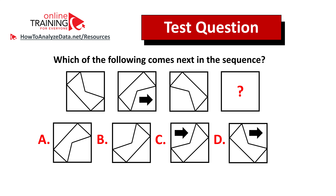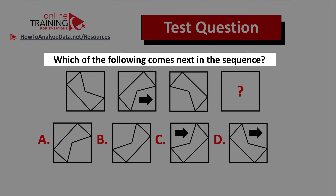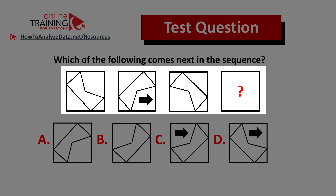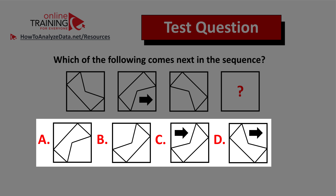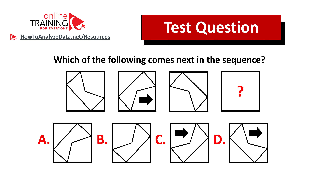Here's a question you can try to solve on your own. Which of the following comes next in the sequence? You are presented with four different squares, and each square has another figure inside. There are four possible choices: A, B, C, and D. Now might be a good time to pause this video and give yourself 10 to 15 seconds. One tip: always look for patterns. If you've figured out the answer, feel free to post it in the comment section along with your rationale so I can give you my feedback.